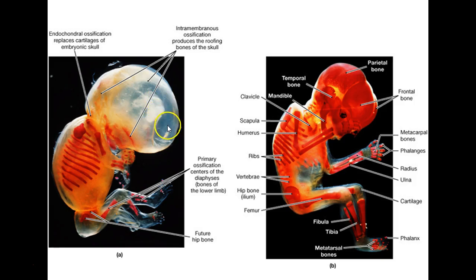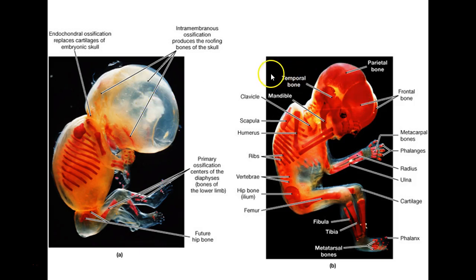I'll be real specific. Flat bones of the skull, like a frontal or parietal — they do intramembranous ossification, true or false? You can go true. Make sure you spell it intra — I-N-T-R-A — because that means within.